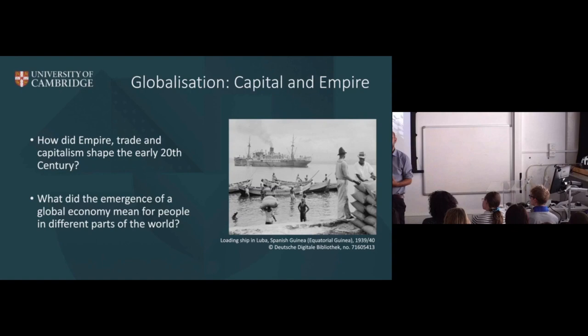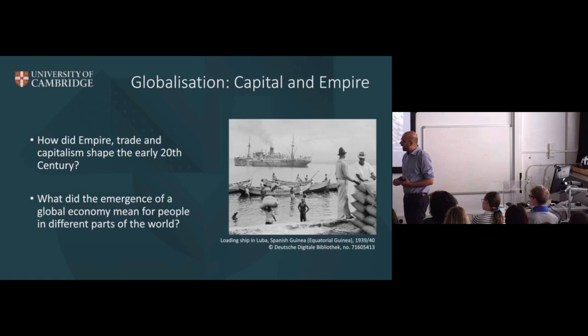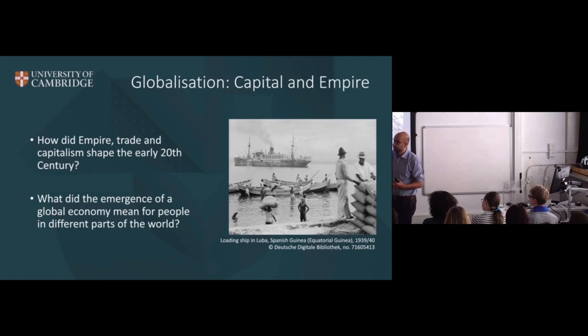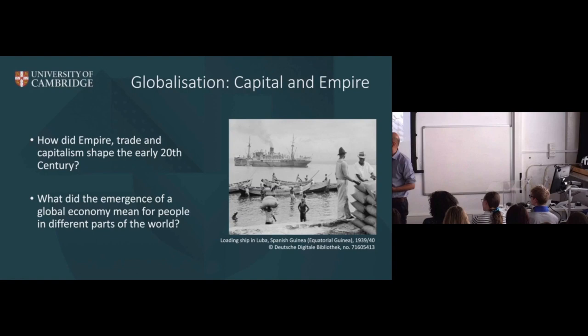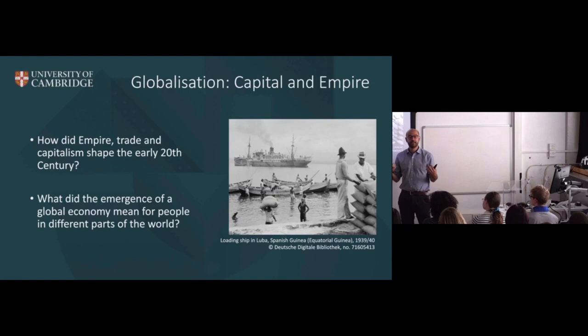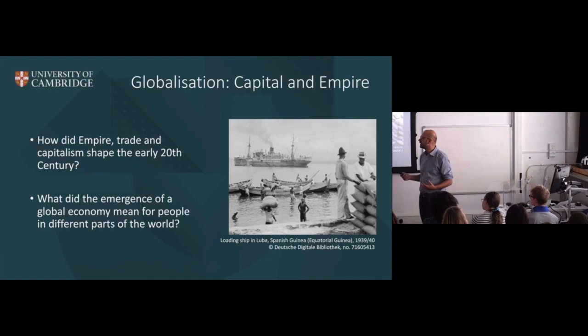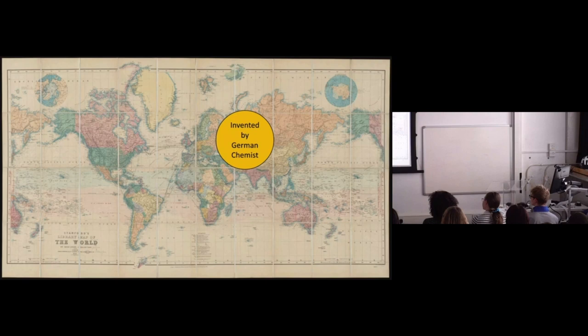The questions I think we can start with are really about how capitalism, how trade, how empire shaped not just the early 20th century but what was to come over the following 100 years. This is tied up with the emergence of a global economy — not that globalization is something that only happens in the 20th or 21st century. Over the course of history there have been many instances when different parts of the world came closer together, where people, ideas, cultures, and products connected places. But the late 19th century going into the beginning of the 20th century is one of those moments when the world is becoming smaller.